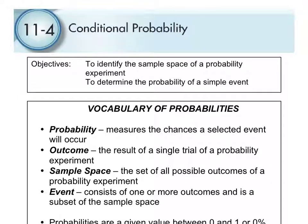This is section 11.4, and we're going to start to talk about simple conditional probabilities. We've got two objectives: we're going to identify the sample space of a probability experiment, and we're also going to determine the probability of a simple event. This really is a basic introduction to probabilities in general.